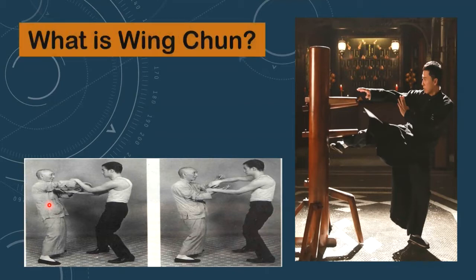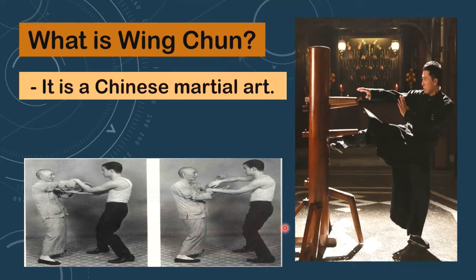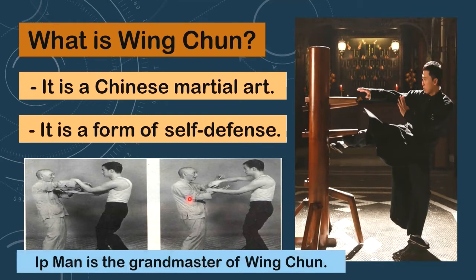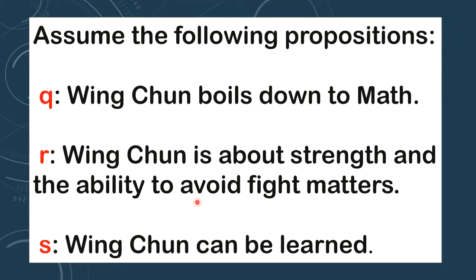So what is Wing Chun? Just take a look at these pictures. Wing Chun is a Chinese martial art — it is a form of self-defense. Do you see this old man here? His name is Ip Man. He is the grandmaster of Wing Chun. So here are some propositions about Wing Chun.